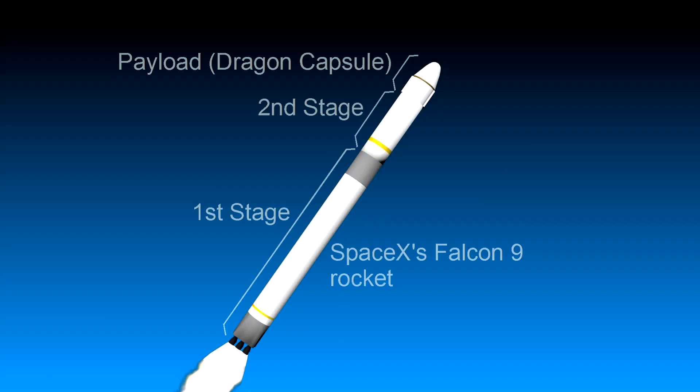So a rocket is broken up into multiple stages, sort of like having multiple rockets stacked on top of each other. SpaceX's Falcon 9, for example, has just two stages.